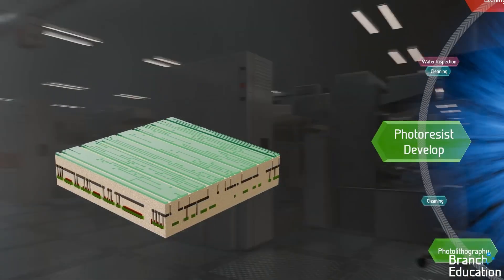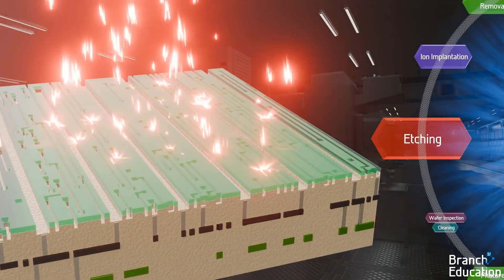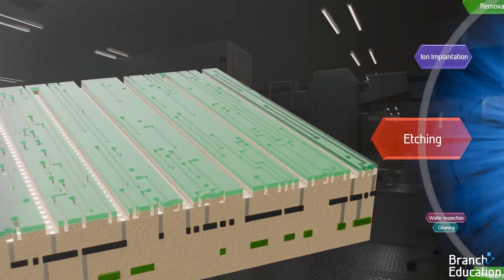With the mask layer built, the wafer goes to an etching tool, where a plasma etcher removes a vertical column through the exposed silicon dioxide until it reaches the previous layer's metal layers.